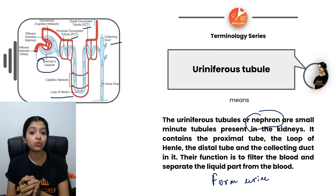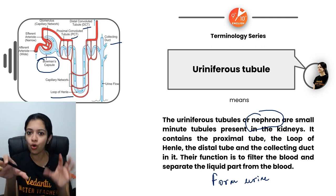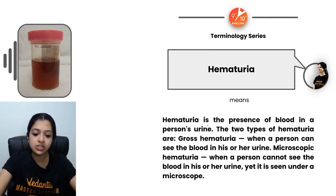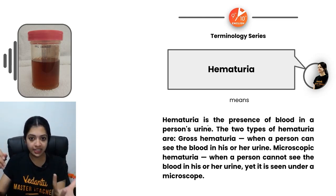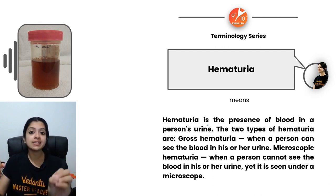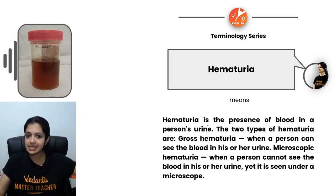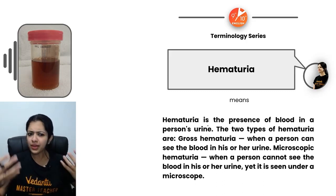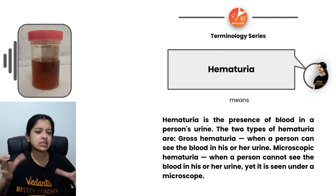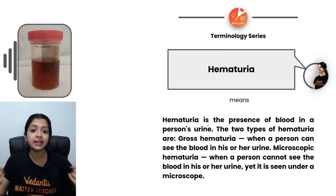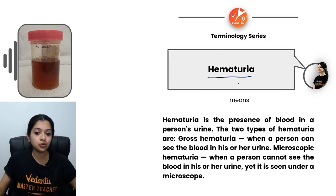Nephrons also maintain a balance of minerals and water in the human body, and help maintain blood pressure. Hematuria is the condition where blood is present in a person's urine. Ideally, red blood cells should not be found in urine because they don't normally pass through the Bowman's capsule during ultrafiltration, but some underlying disorder can cause this condition.